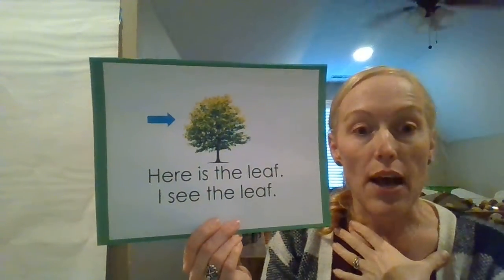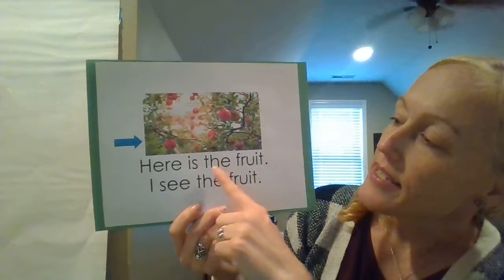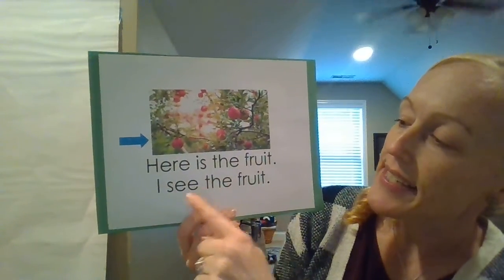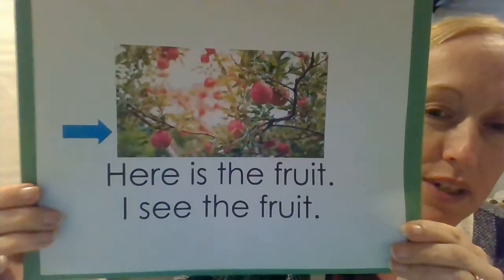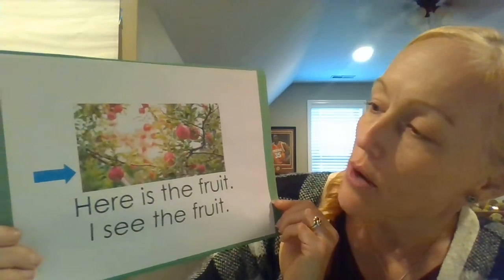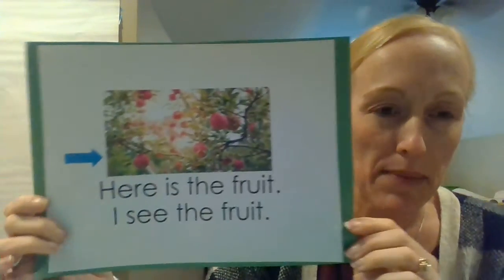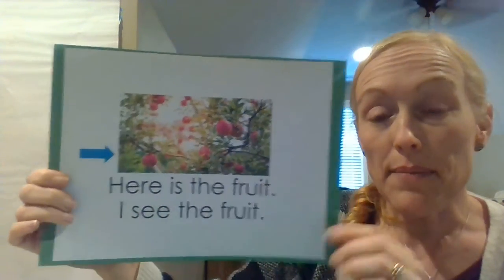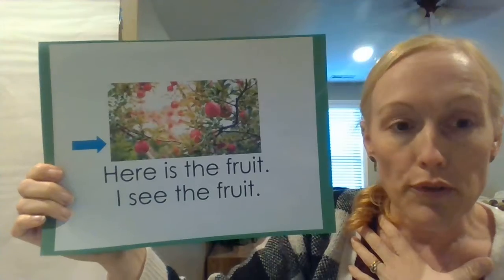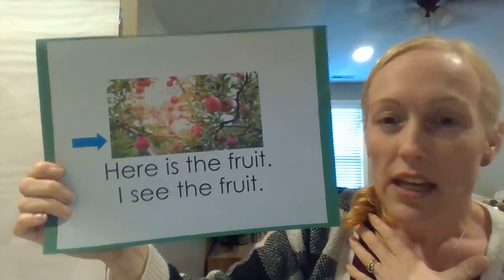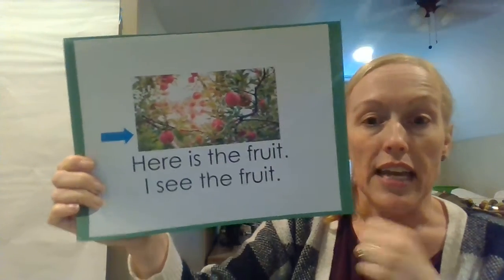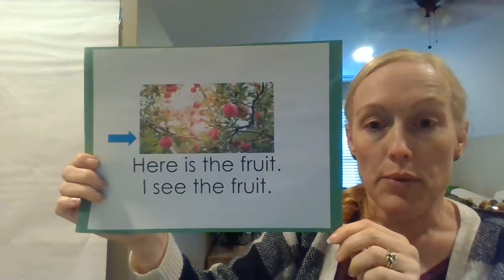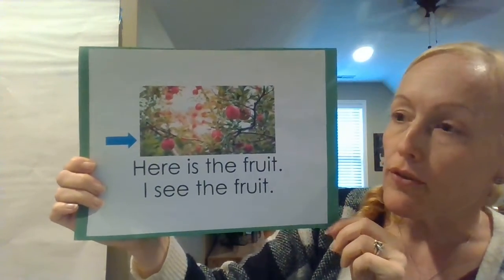Some of the trees even have flowers on them. Here is the fruit. I see the fruit. If you look close, you see some fruit. I'm not real sure exactly what kind of fruit is growing on this tree — it kind of looks like maybe it's a pomegranate, but I'm not real sure. Some trees grow fruit, like apple trees. Other trees do not grow fruit, or they might grow a nut, like an acorn — like an oak tree grows an acorn. But not all trees will grow fruit.